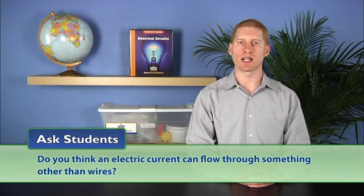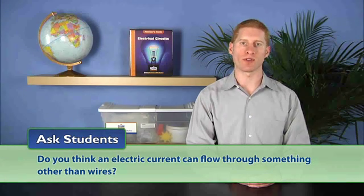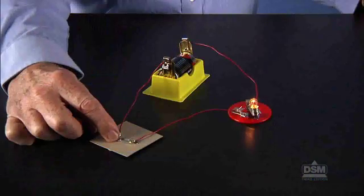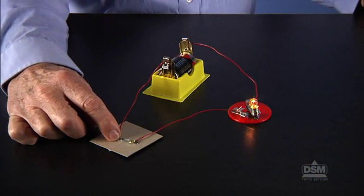To begin the activity, lead a class discussion by asking students: do you think an electric current can flow through something other than wires? Students may recall that a current flowed through a paperclip in the previous activity.